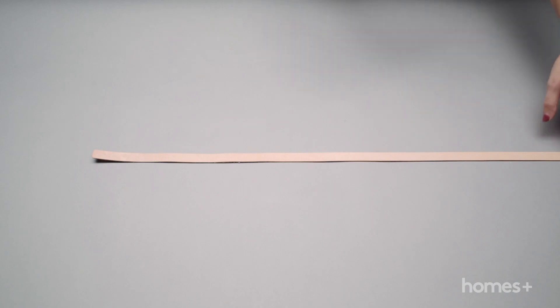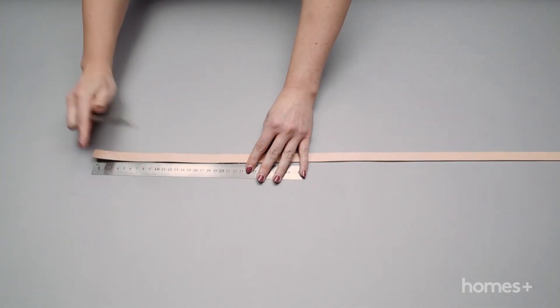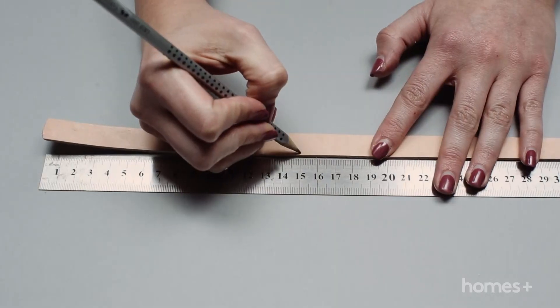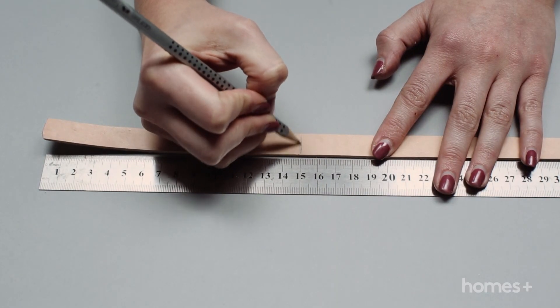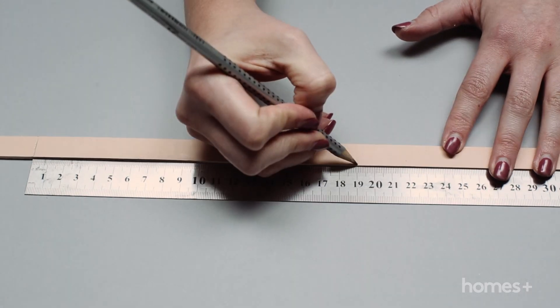Lay the leather strap flat on a workspace. Using a ruler and pencil, mark the following lengths to make five smaller straps. You'll need one 15 centimeter length, two 16 centimeter lengths, and two 19 centimeter lengths.